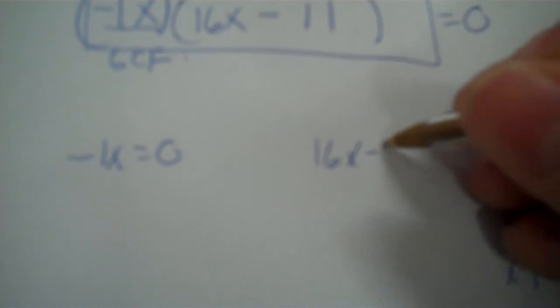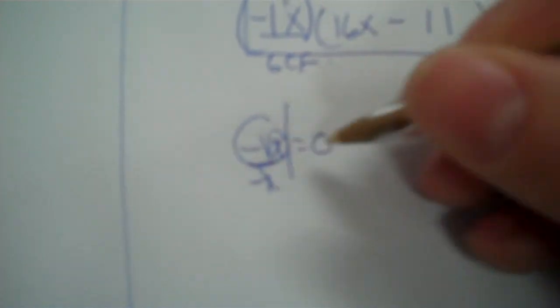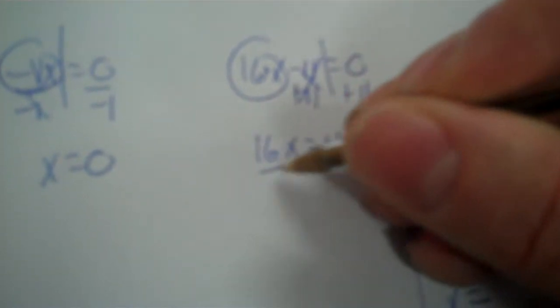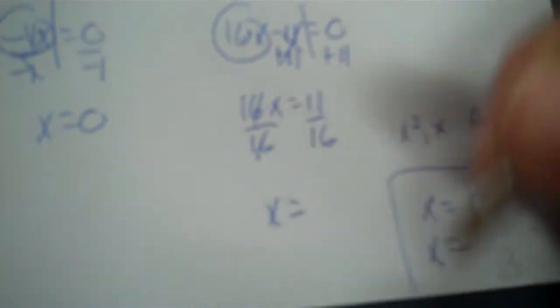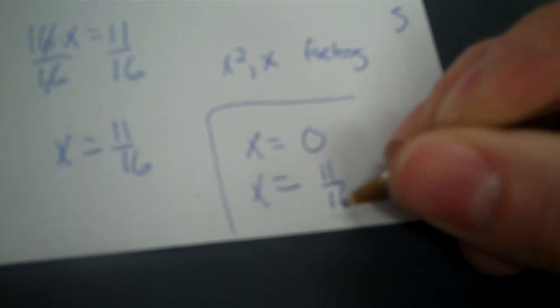P1 negative 1x could equal 0; P2 16x minus 11 could equal 0. Divide each side by negative 1: x equals 0. That's the seconds that go with that 0 feet — but that's not the answer I put. Then plus 11 plus 11: 16 times x equals 11, divide by 16. 11 divided by 16 is a decimal — second PRB gives 11 sixteenths. So it will take 11 sixteenths of a second — less than a full second.